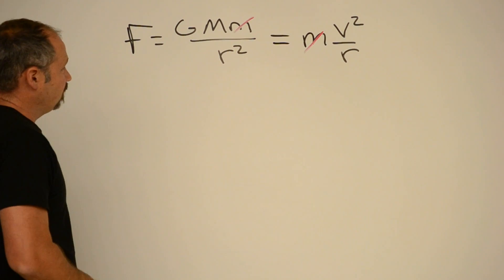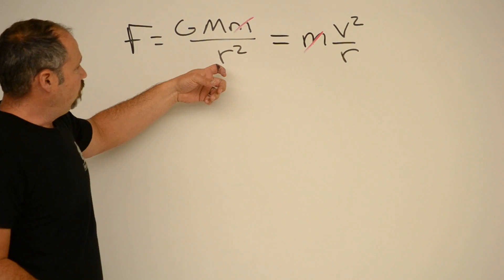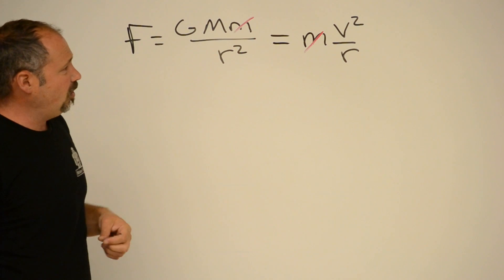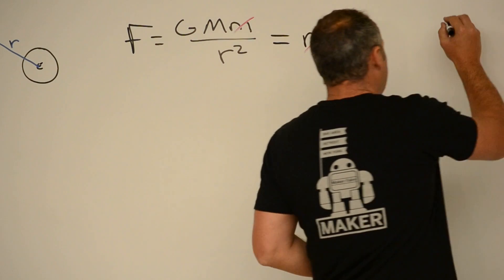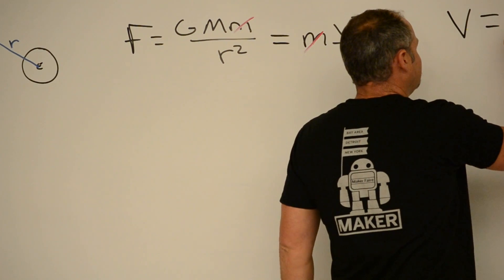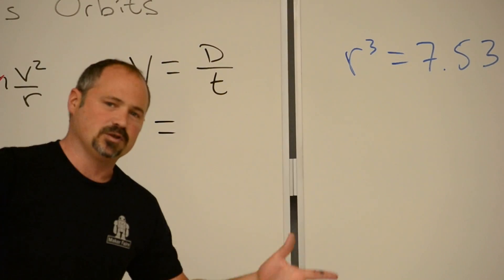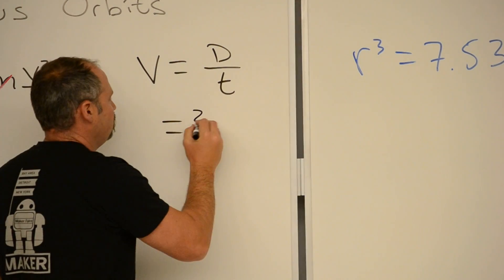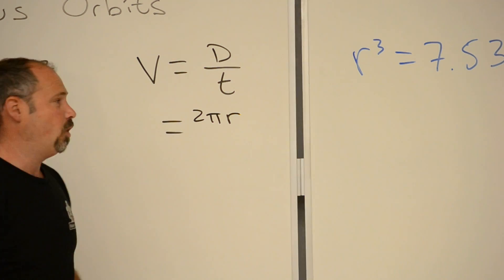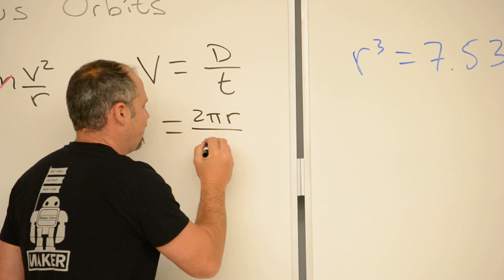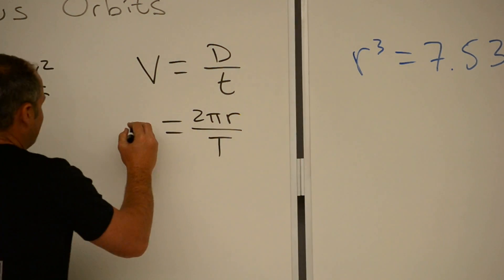All right. Well, we know what the mass of Earth is. We know what the universal constant is. And we want to find r, so we just need to solve for the velocity. So I know that the speed of Bender is his distance over the time. Well, what is the distance? It's the circumference of the circle he makes. So that's 2πr. And what is the time? It's the period, the time of one orbit. So I'll give that a capital T. And for Earth, it's 24 hours. Great. So that's v.